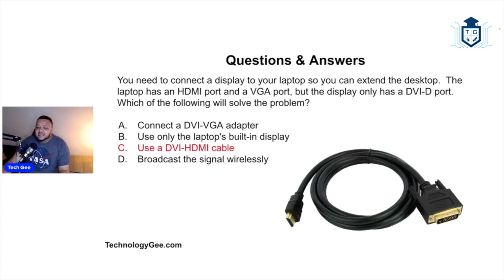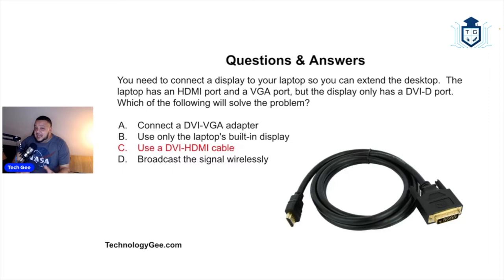You would use a DVI-to-HDMI cable. You're trying to transmit digital signals here. VGA only transmits analog signals; HDMI transmits digital signals; and DVI-D in particular also transmits digital visual signals. So you use a DVI-to-HDMI cable to get those digital signals working.